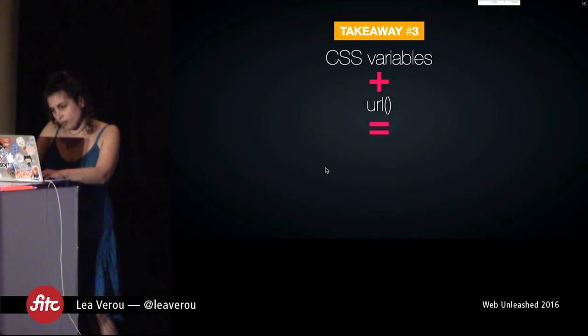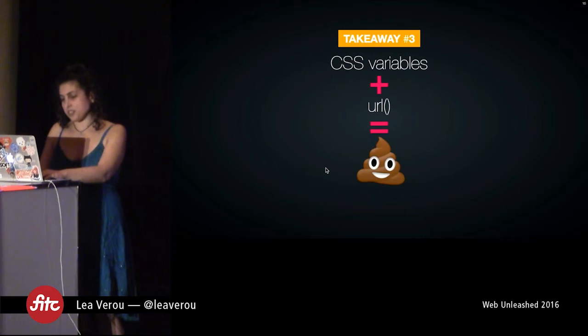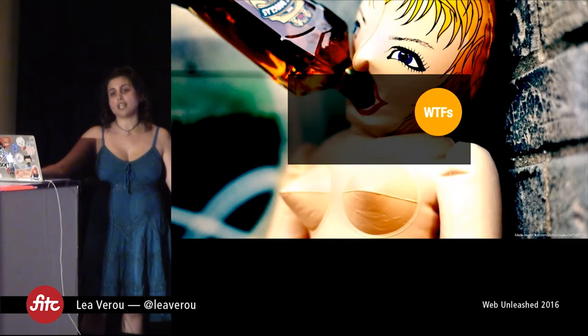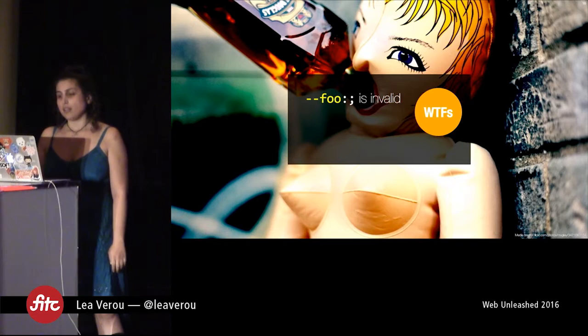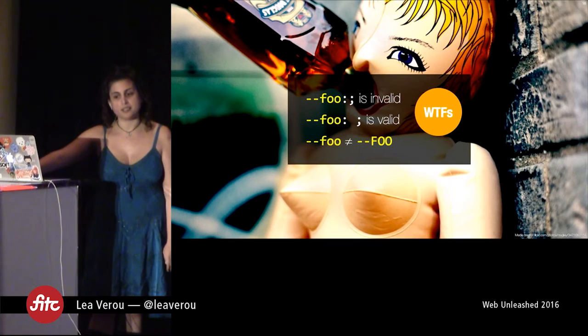CSS variables plus URL equals — chocolate ice cream. There's actually a bug in Chrome where if emojis are above a certain size they disappear. Some more WTFs, because this is CSS after all: as you might expect, an empty value is invalid. If you define a variable and give it an empty value, that's an invalid declaration — it gets dropped per usual CSS rules. However, a variable whose value is a single space is valid, and its value is that space. Also, unlike any other CSS property, variables are case-sensitive.